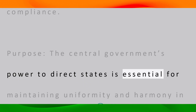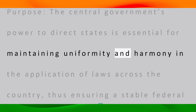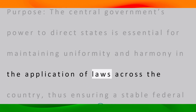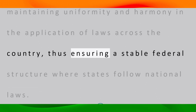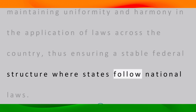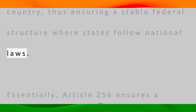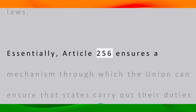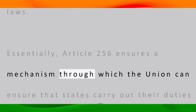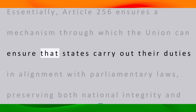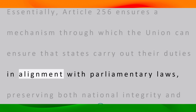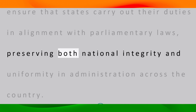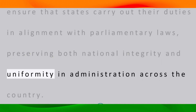The central government's power to direct states is essential for maintaining uniformity and harmony in the application of laws across the country, thus ensuring a stable federal structure where states follow national laws. Essentially, Article 256 ensures a mechanism through which the union can ensure that states carry out their duties in alignment with parliamentary laws, preserving both national integrity and uniformity in administration across the country.